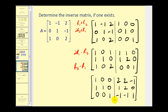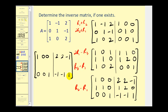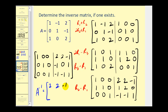We're close — we can see the main diagonal of ones and zeros in place. We just need one more element to be zero. We'll replace row two with row two minus row one: 1 minus 1 is 0; 1 minus 0 is 1; 0 minus 0 is 0; 1 minus 2 is negative 1; 2 minus 2 is 0; and 0 minus negative 1 is positive 1. The left side is now the identity matrix, so the right side is A inverse: 2, 2, negative 1; negative 1, 0, 1; and negative 1, negative 1, 1.